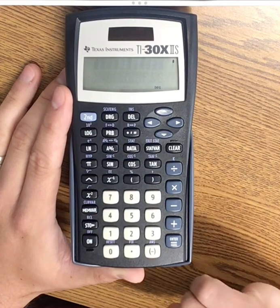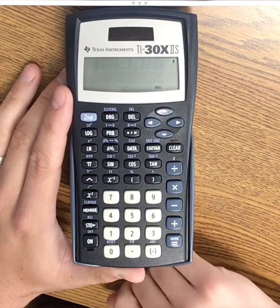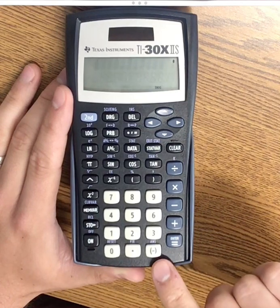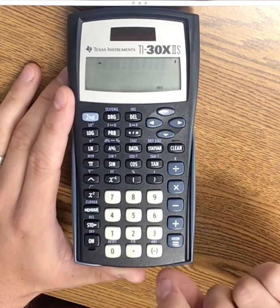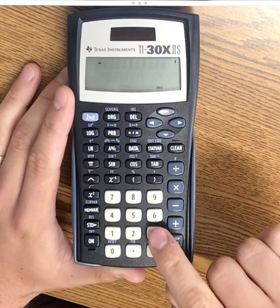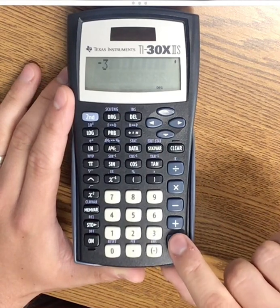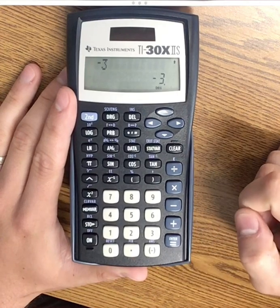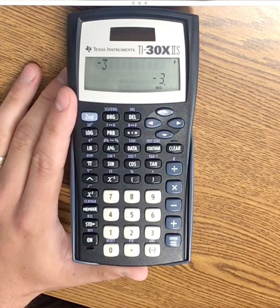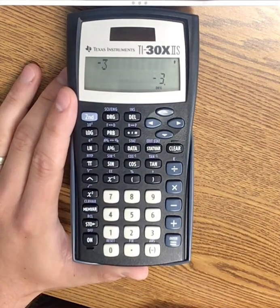For example, if I want to type the number negative 3, I would type the negative symbol and then the number 3. If I press enter, I get negative 3. If I were to do an addition problem with negative numbers,